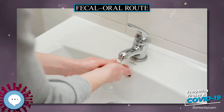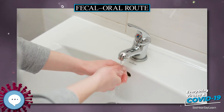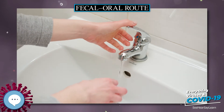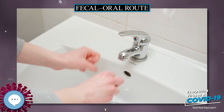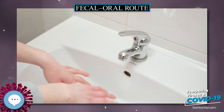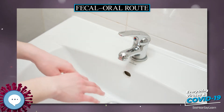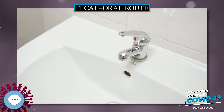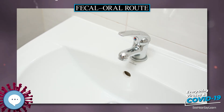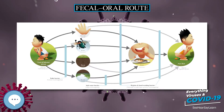The common factors in the fecal-oral route can be summarized as 5 Fs: fingers, flies, fields, fluids, and food. Diseases caused by fecal-oral transmission include diarrhea, typhoid, cholera, polio, and hepatitis.